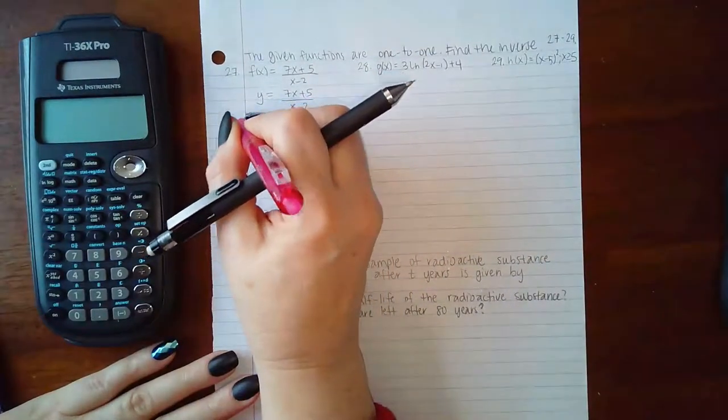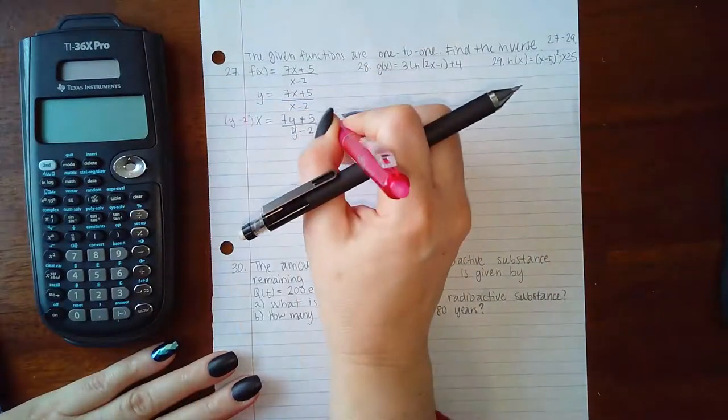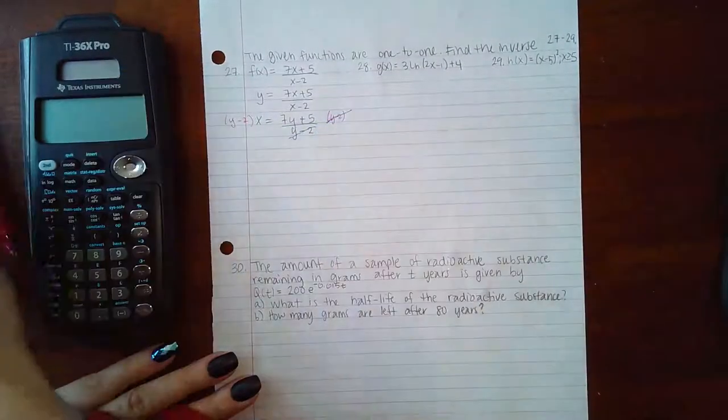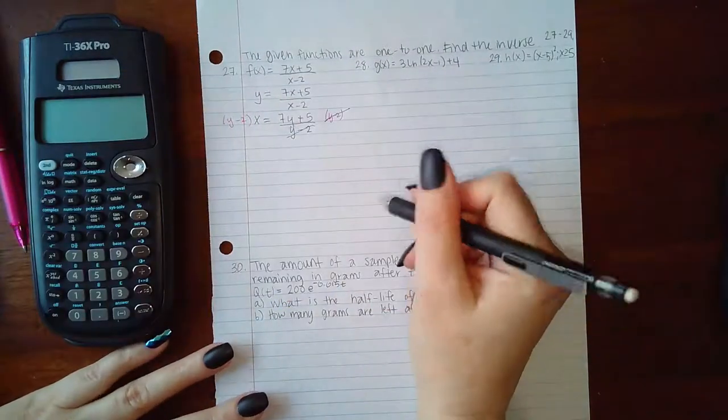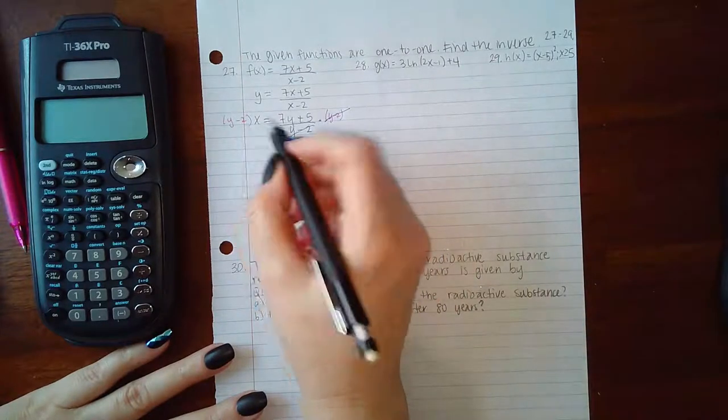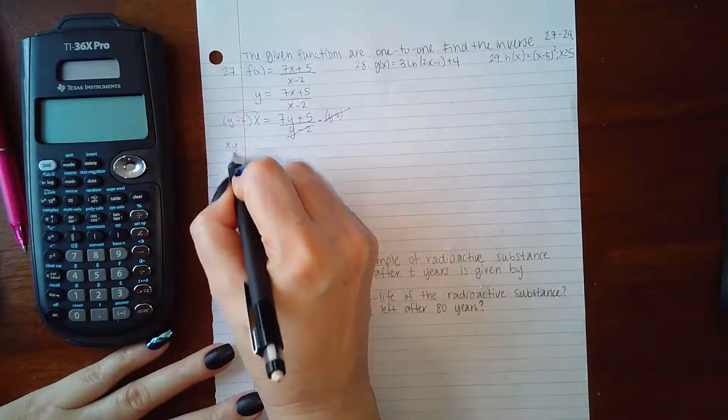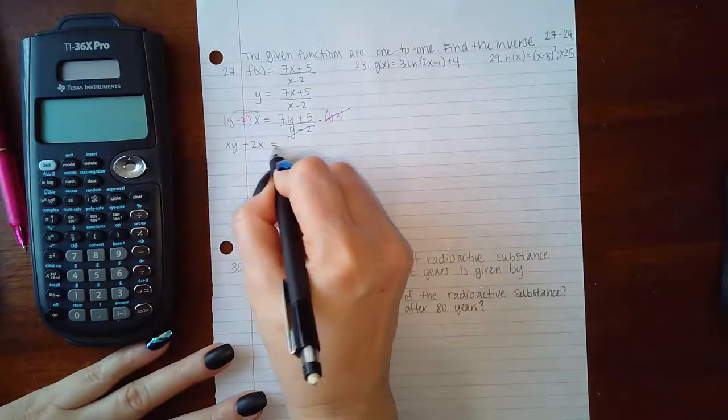The first thing I'm going to do is multiply both sides by my common denominator so that it will cancel, or reduce is actually the proper word. Over here I'm going to distribute that x, so I get xy minus 2x equals 7y plus 5.